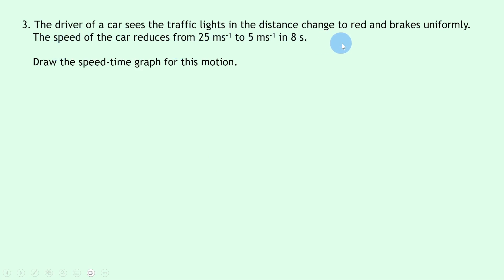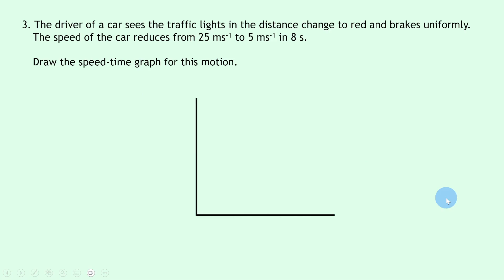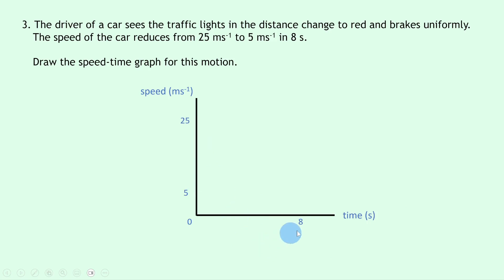Question three says the driver of a car sees traffic lights in the distance change to red and brakes uniformly. The speed reduces from 25 meters per second to 5 meters per second in 8 seconds — draw the speed-time graph for this motion. We draw our axes with speed in meters per second and time in seconds, then label the values: zero at the origin, 5 and 25 meters per second on the y-axis, and 8 seconds on the x-axis. Braking uniformly means slowing down at a constant rate — a deceleration.